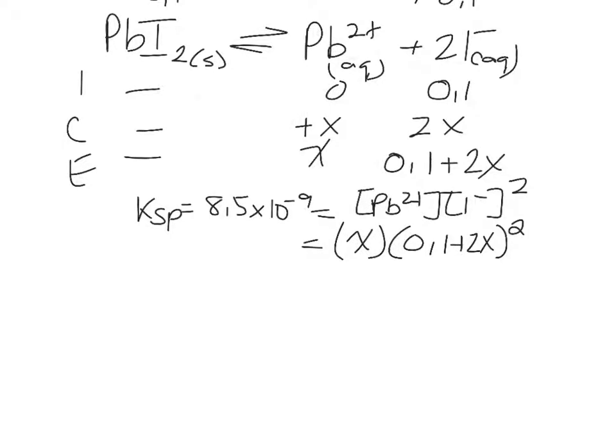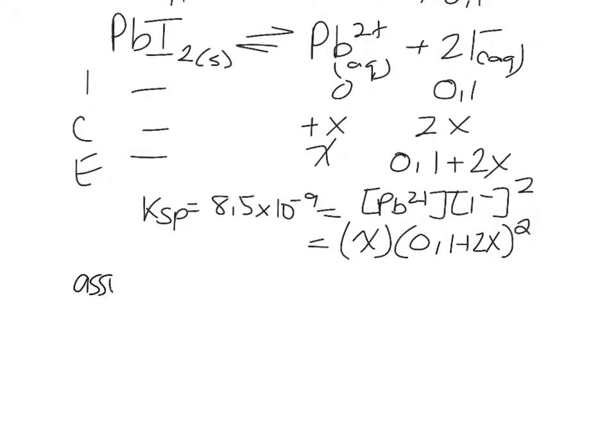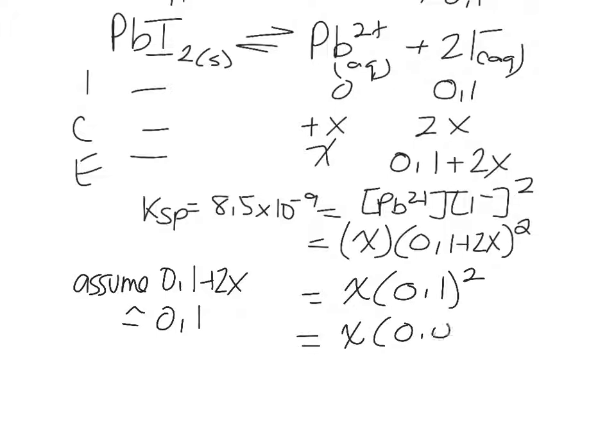Being that we're chemists and not math people, we're going to take the efficient route. We are going to make an assumption. 0.1 plus 2X is approximately 0.1 so that we don't have to foil that. So this becomes X times 0.1 squared. So X is going to be what value?